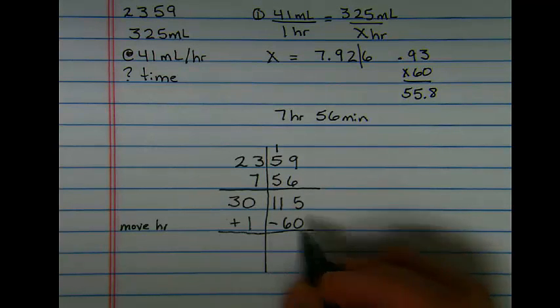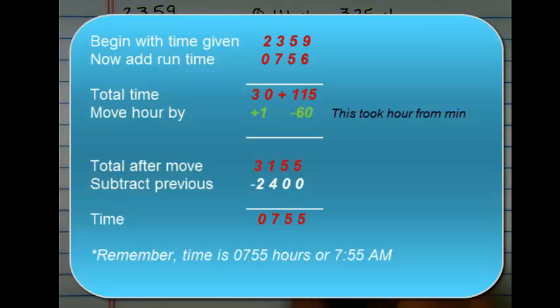This moves my hour to my hour column and leaves my minutes with less than an hour. I have 55 minutes left in the minute column now and now 31 hours.